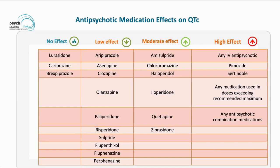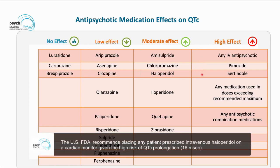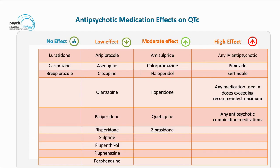Here is another table outlining antipsychotic medication effects on QTc. Those with negligible or no effect include lurasidone, cariprazole, and brexpiprazole, whilst aripiprazole, asenapine, and clozapine have low effect. Moving towards the high-effect end — where we must be very cautious — are intravenous antipsychotics, pimozide, and sertindole, which are at the top in terms of QTc prolongation risk.